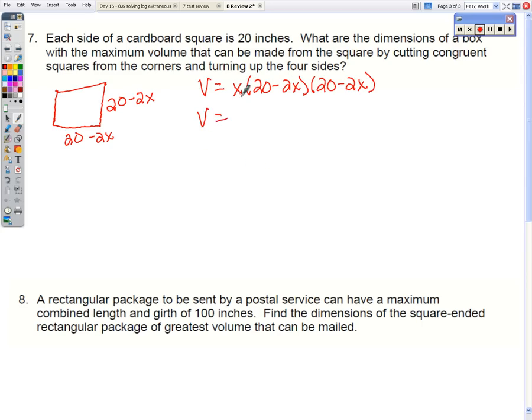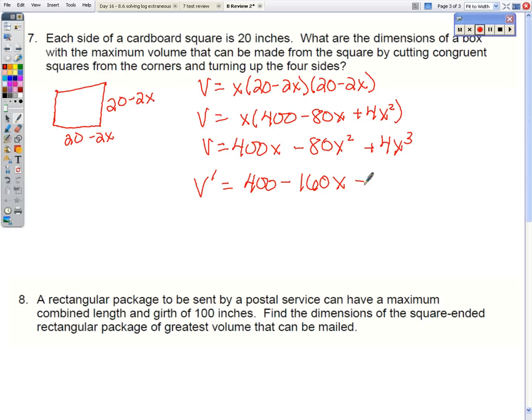So the volume is x times 20 minus 2x times 20 minus 2x. We're going to multiply all these together. Distribute that x. Now we need the derivative.